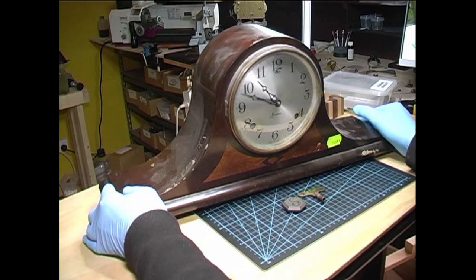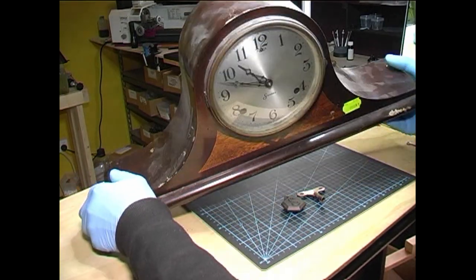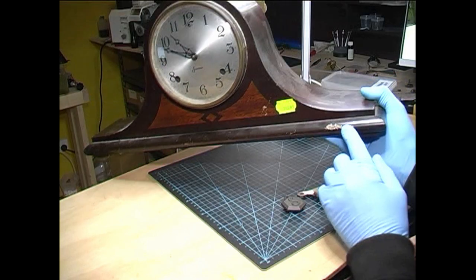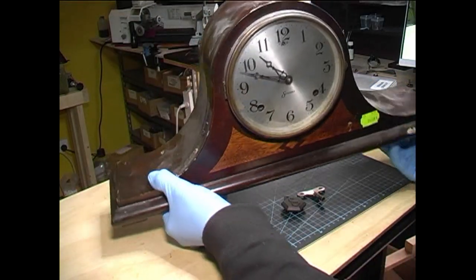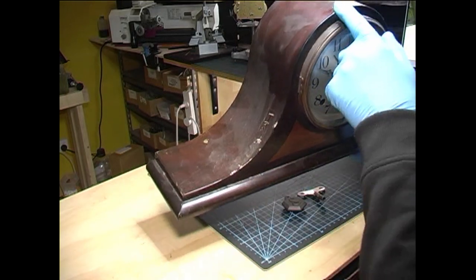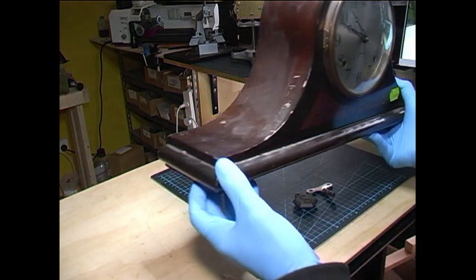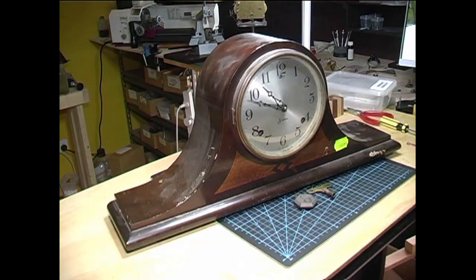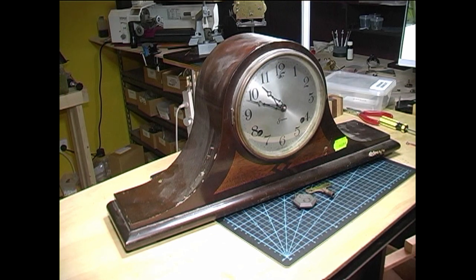This is a Sessions Berkeley Mantle Clock in a bit rough condition. The case has marks there on the inlay, up at the top, and down the side. Now what we'll do with that, once the mechanism has been removed, I'll restore the case and French polish it and it will come up quite a treat compared to what it is at the moment.